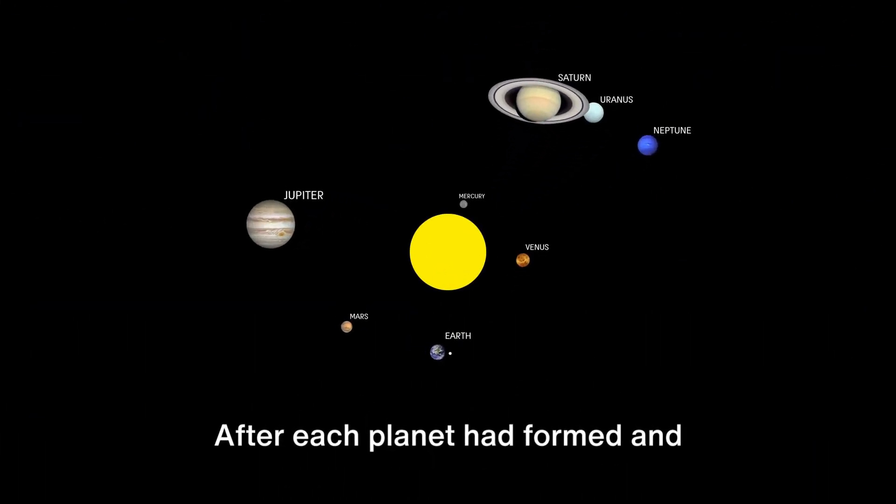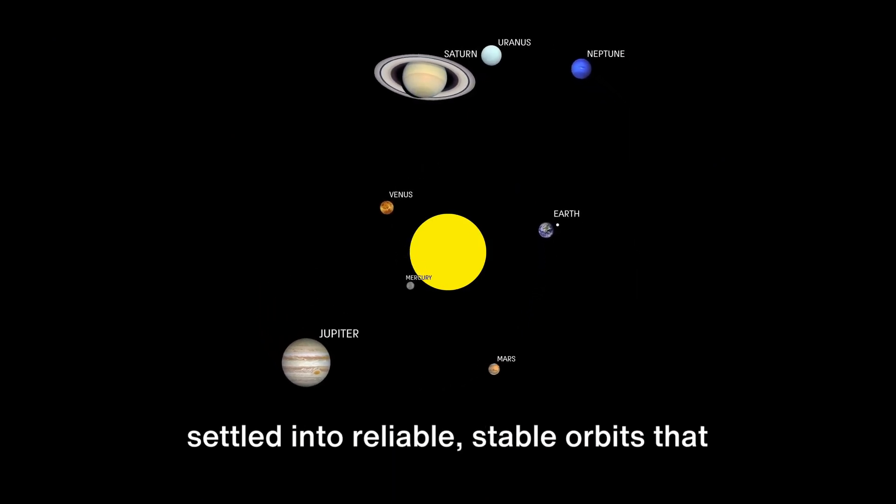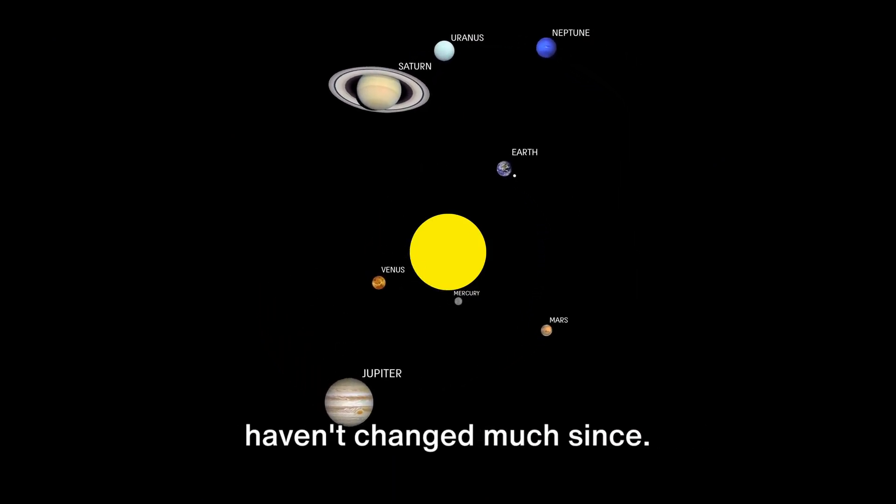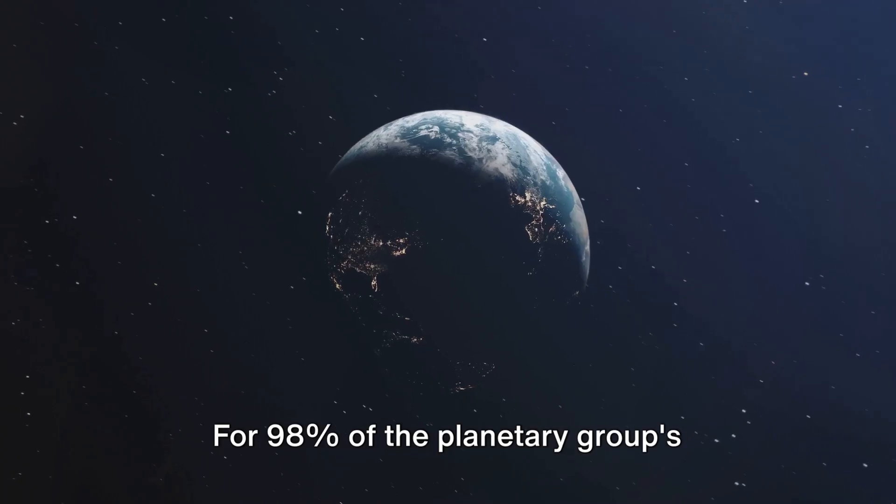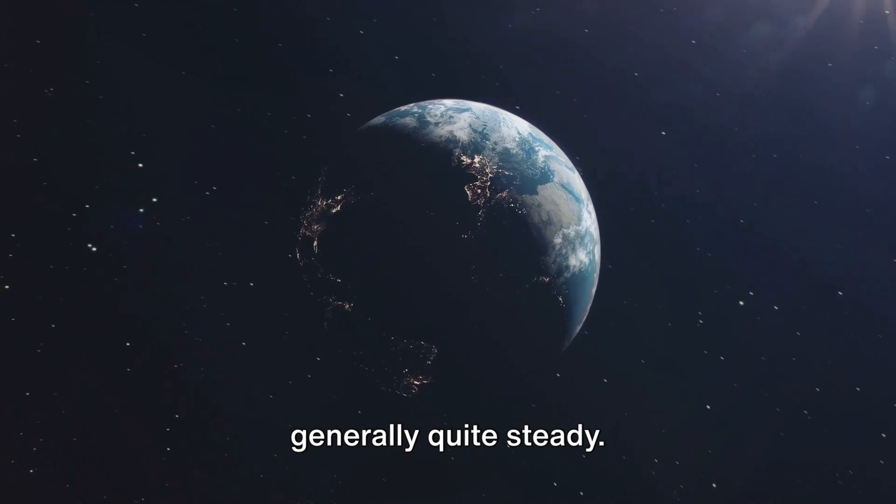After each planet had formed and completed the process of jostling with each other for their positions, they settled into reliable, stable orbits that haven't changed much since. For 98% of the planetary group's lifetime, the planet's orbits have been generally quite steady.